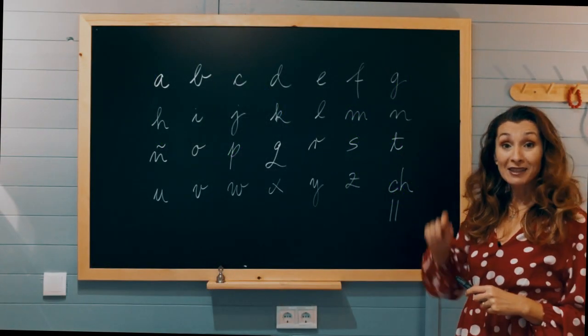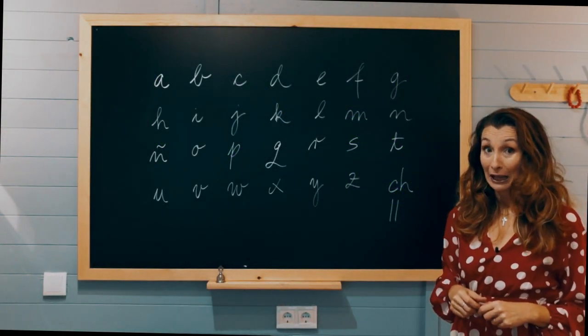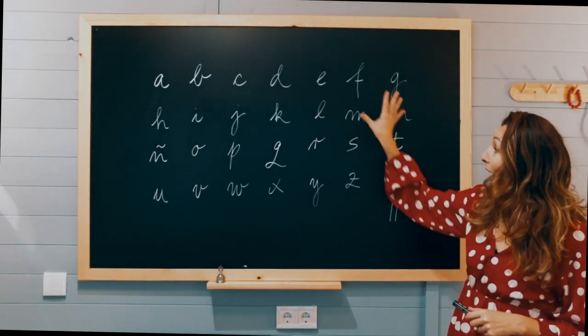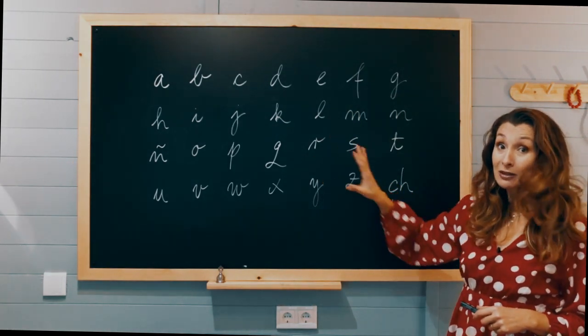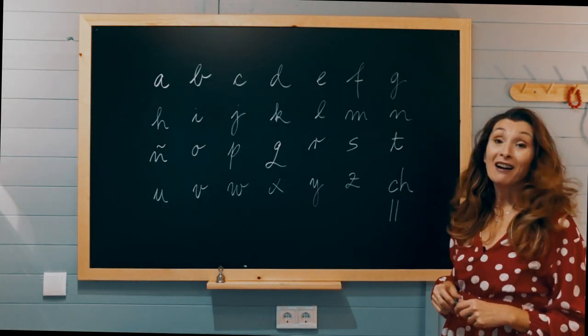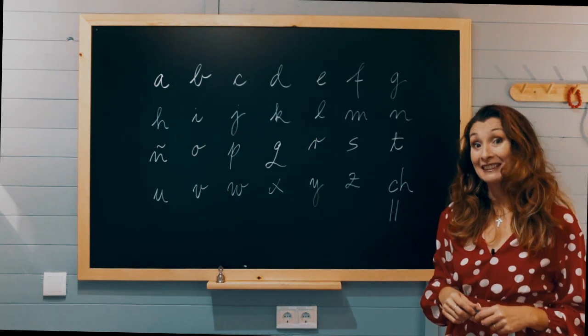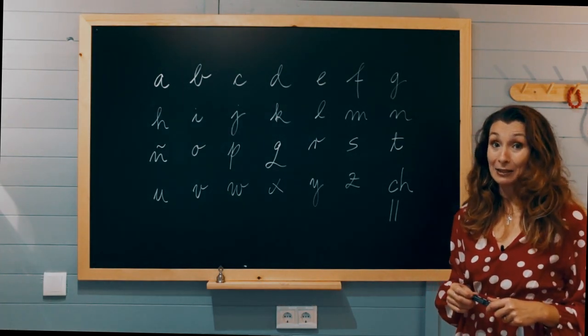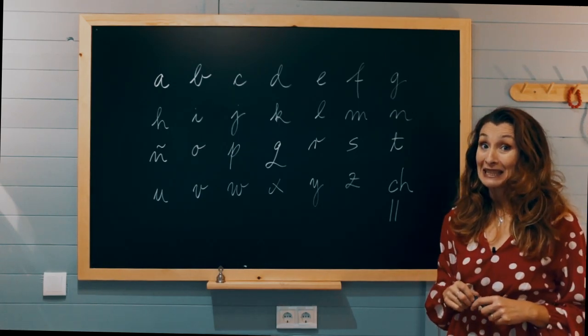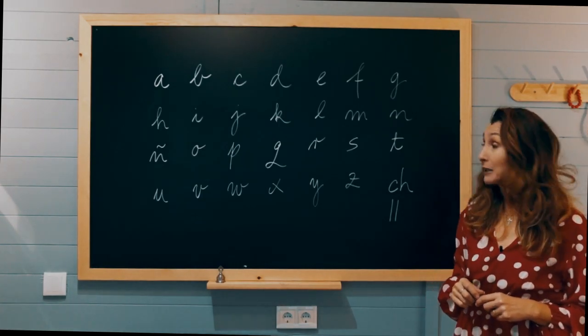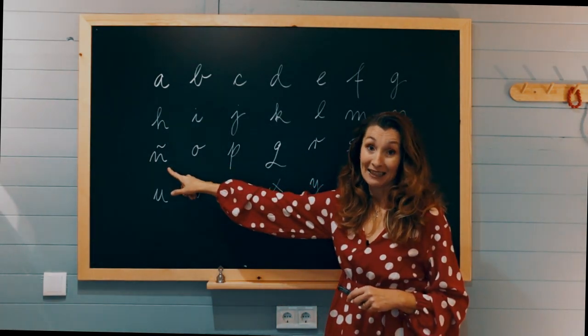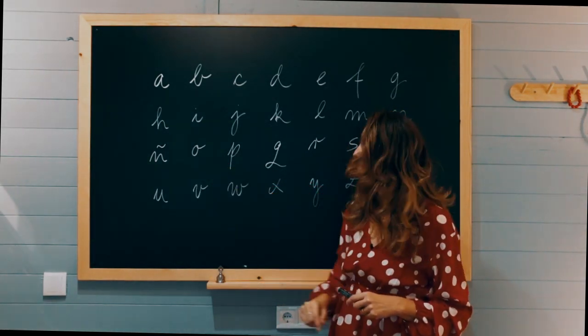Okay, so this here is the Spanish alphabet. Let's ignore these two for the time being. And if you were to count these letters, don't bother, I've already done it for you. There are 27 letters. So 27 letters in the Spanish alphabet, which means one more than in the English alphabet. And the intruder is this letter here.